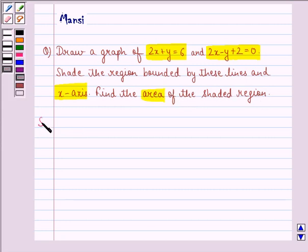Let us start with the solution to this question. First of all, we need to find the points lying on these two lines. First, we'll consider 2x plus y equals 6. This implies that y is equal to 6 minus 2x.